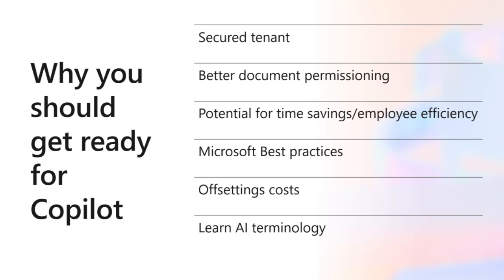One of our customers said that when they started their Office 365 tenant, they just created one team or one SharePoint document library, and everybody throws all their documents into that. They asked, is that going to be good for co-pilot? The answer is no — that means everybody has access to everything, and so will the AI. So we're helping them break that out into different departments, with different permissions of executive versus employee, so that the AI can only see what you can see.